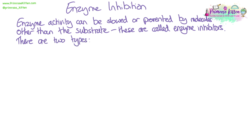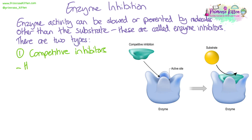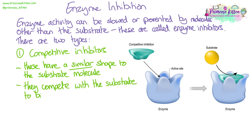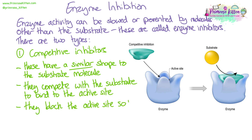There are two types. Competitive inhibitors: these molecules will have a similar shape to the substrate. Be careful here — you cannot say they have the same shape. They compete with the substrate to bind to the active site. If they manage to bind, they will block the active site so that the substrate can no longer bind, and so fewer or no enzyme-substrate complexes are formed.